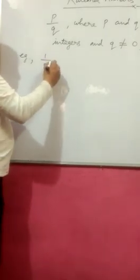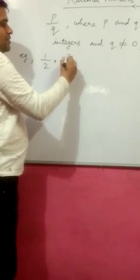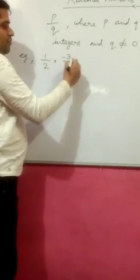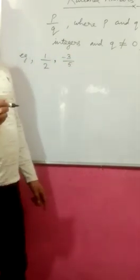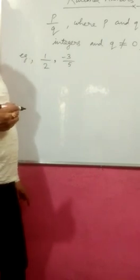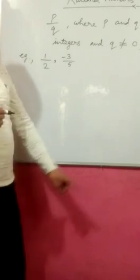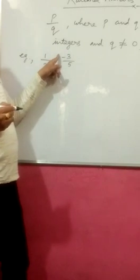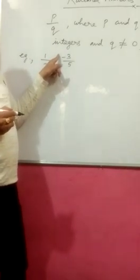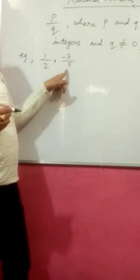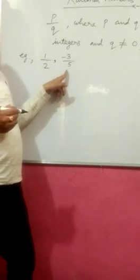2 is the denominator which comes in place of Q and 2 is also an integer. Another example, suppose minus 3 by 5. This is also an example of a rational number. Here, minus 3 is a negative integer, and 5 is also an integer which is a positive integer.